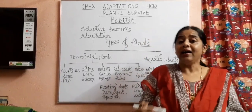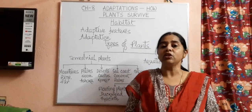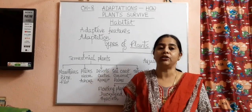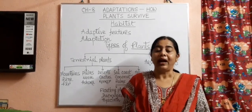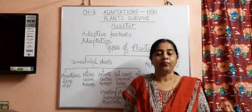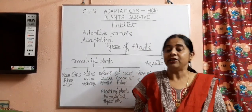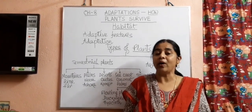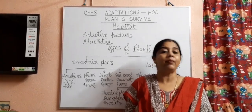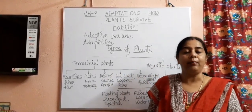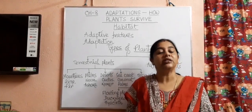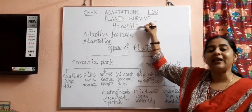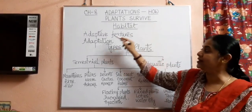On the earth's surface, due to the presence of air and water, it is possible for living bodies to survive and perform their daily activities. But the climate of the earth's surface is not the same everywhere. That's why living bodies — whether plants or animals — have some special features which help them to survive in their habitat.